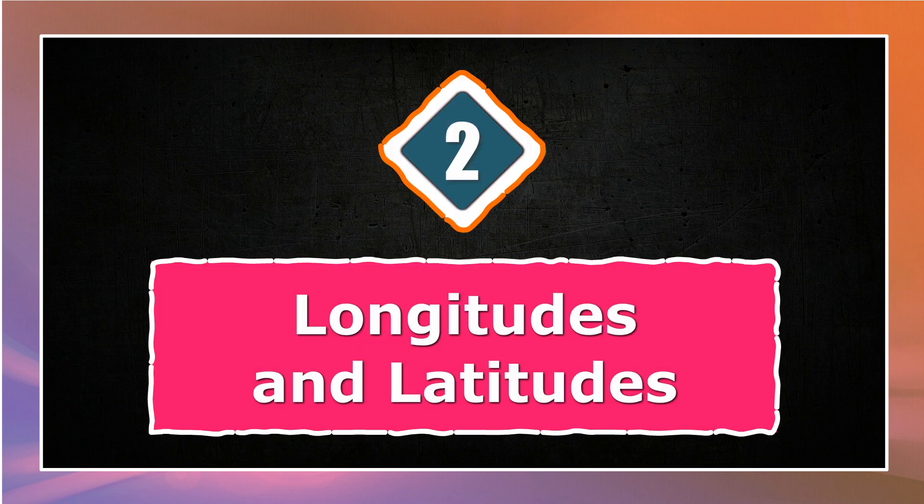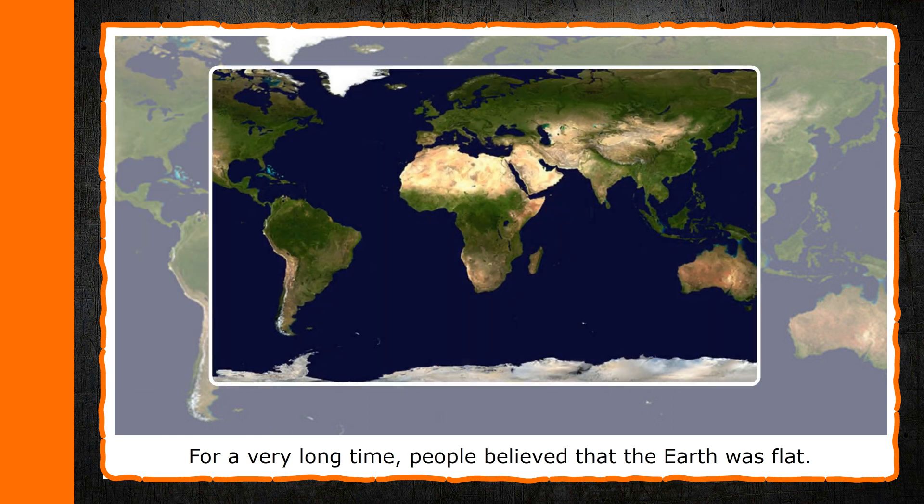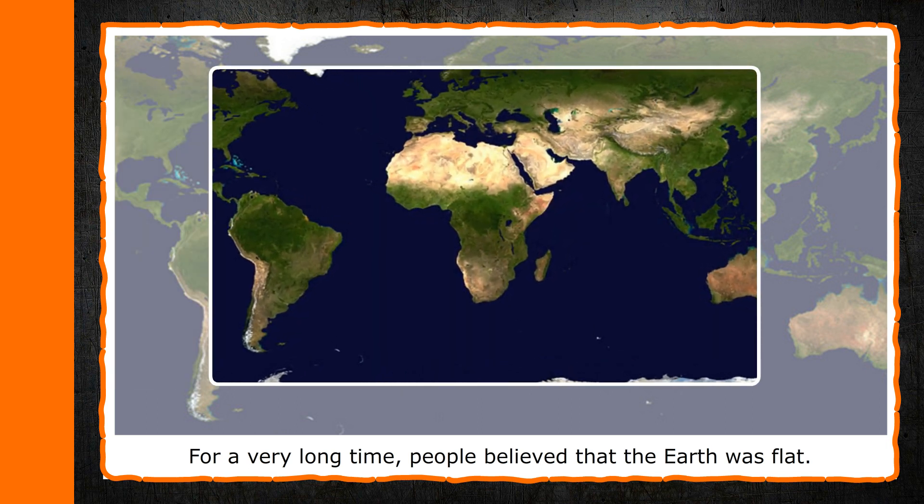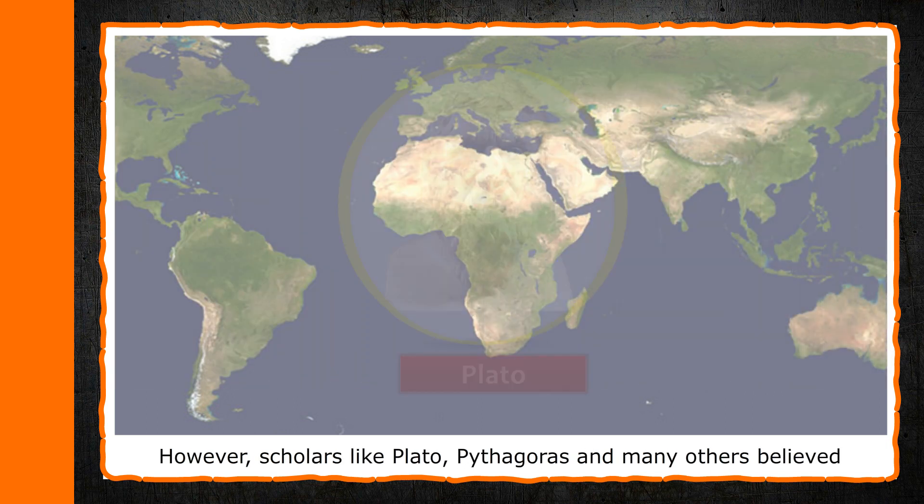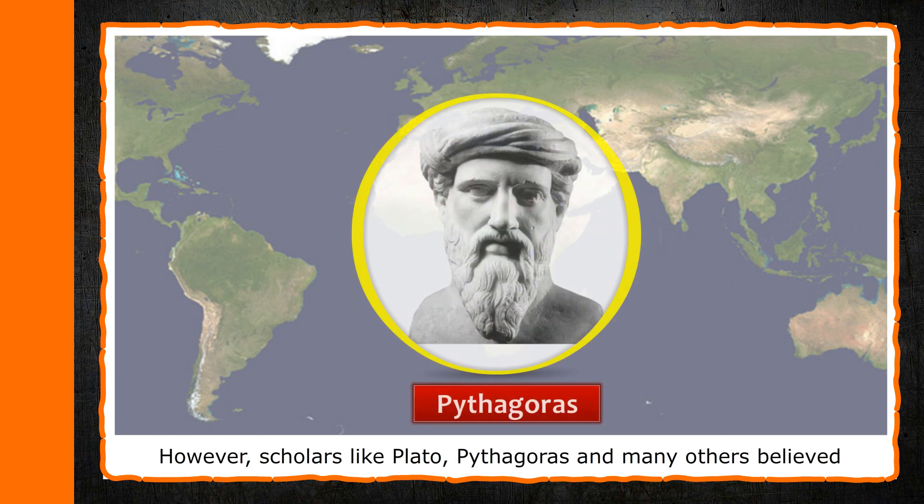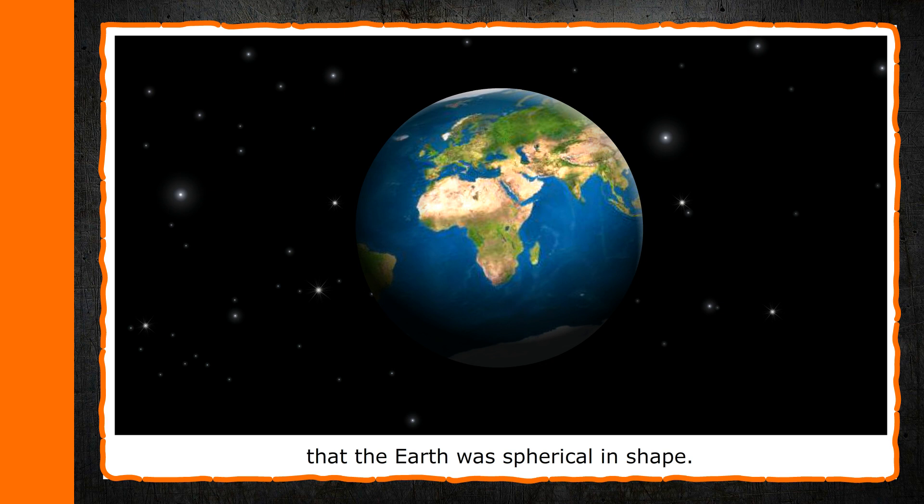Chapter 2: Longitudes and Latitudes. For a very long time, people believed that the earth was flat. However, scholars like Plato, Pythagoras and many others believed that the earth was spherical in shape.